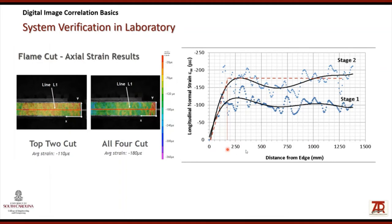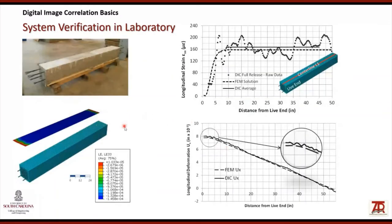The strain data is plotted with horizontal axis as distance from the edge and vertical axis as longitudinal strain. The dots represent the raw data and the solid dark line represents average values. An initial linear trend is observed, followed by a constant trend — the distance over which the linear trend occurs corresponds to the transfer length. The system has been further validated through comparison with finite element models, showing good agreement for both strains and displacements, including the displacement change in the transfer length region.